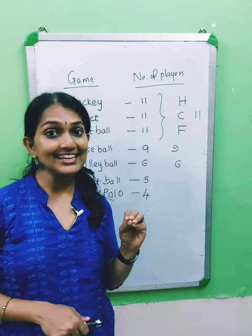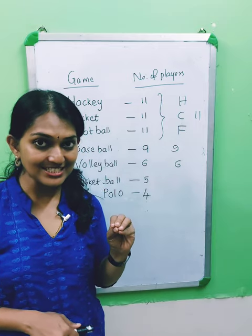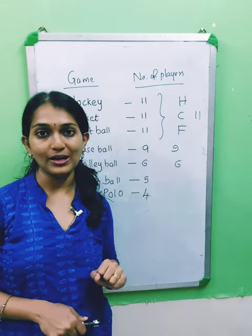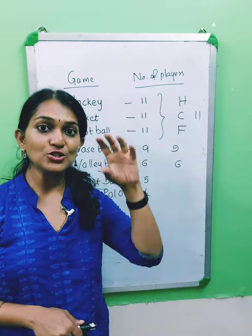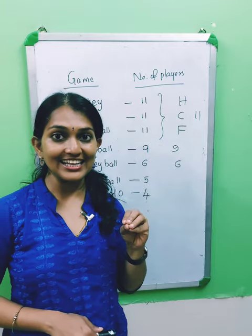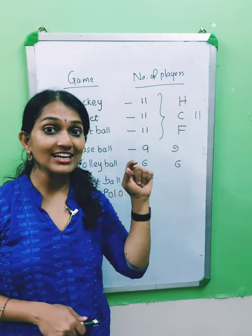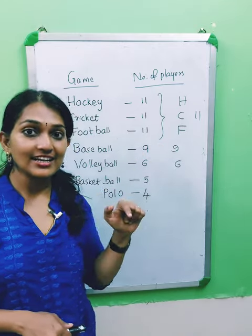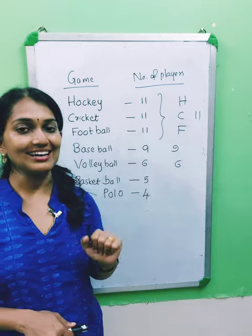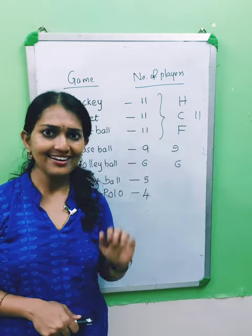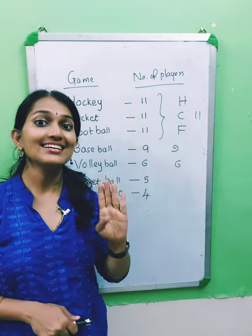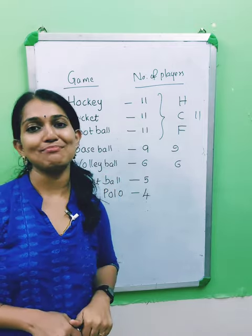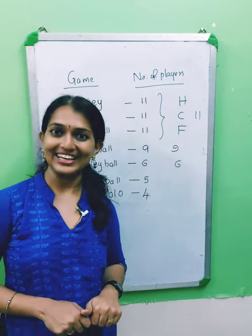Where do all those players in hockey, cricket, and football stand? Comparing to 9 or 6? That means baseball has 9, volleyball has 6, basketball has 5, and polo has 4 players.